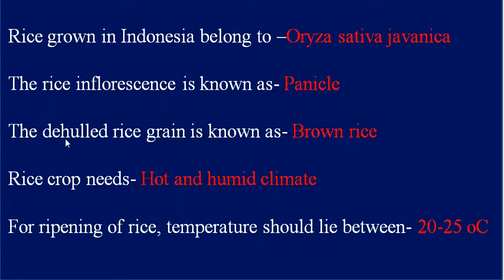The de-hulled rice grain is known as brown rice. Rice crop needs a hot and humid climate. For ripening of rice, the temperature should lie between 20 to 25 degrees Celsius.